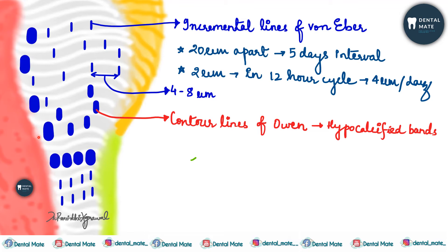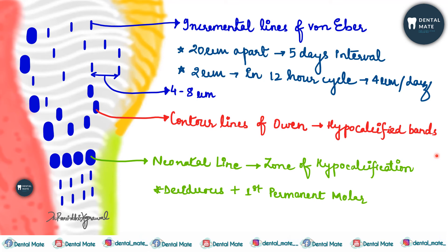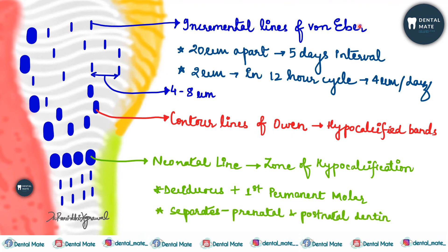When secondary curvatures coincide, the contour lines of Owen are formed. The neonatal line is seen in deciduous teeth and in first permanent molars. Both contour lines and neonatal lines are hypocalcified bands. The neonatal line represents a zone of hypocalcification and separates prenatal and postnatal dentine. These are accentuated contour lines of Owen, and they reflect the abrupt change in the environment that occurred at birth.